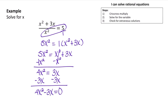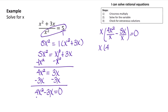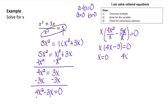Now I can solve this. I'm going to use factoring, because these two terms have a GCF of x. I can factor an x out of both terms, dividing each term by x. That gives me x times (4x minus 3), because x squared over x becomes just x, and 3x over x becomes 3. So x times (4x minus 3) equals 0.